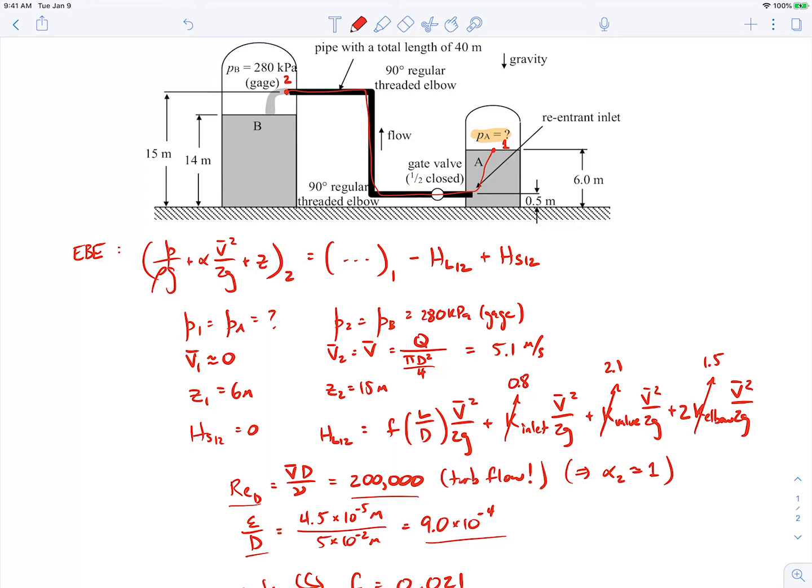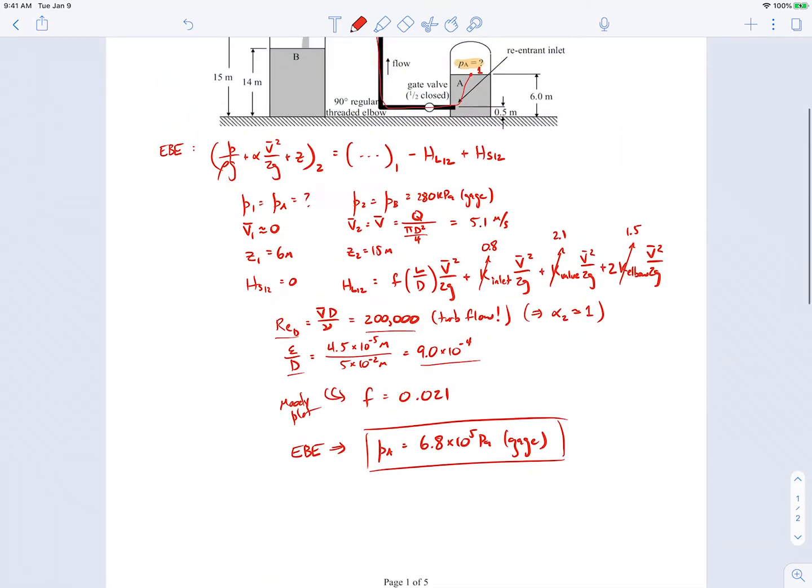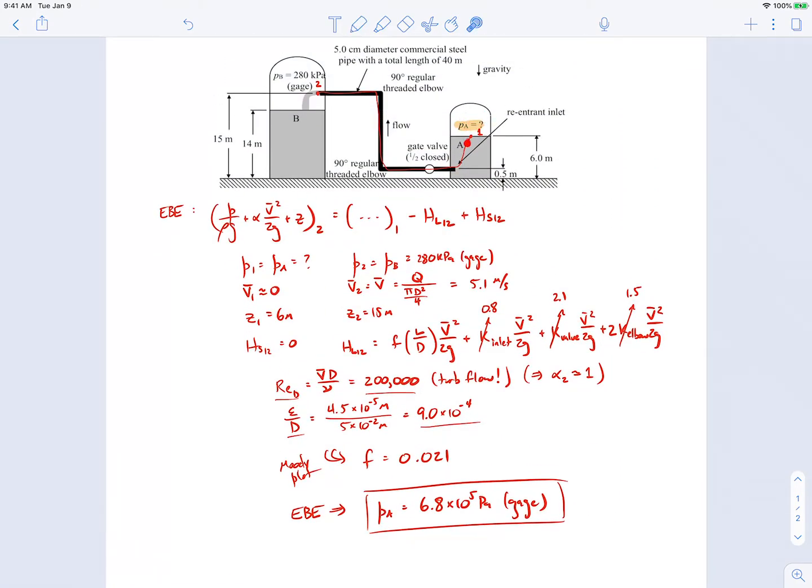So we can go ahead and plug in all the values back into our extended Bernoulli equation, just kind of rearrange the equation, and ultimately what I'm trying to solve for is PA. So we can work all that out, and I'm not going to go through the algebra. I don't think that part's of much value to you. But if you work it all out, you'll get that the PA comes out to be 6.8 times 10 to the 5th Pascals gauge. So that's the pressure we would need at this point in order to be able to push the fluid through this pipe at the given volumetric flow rate.